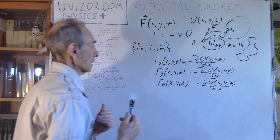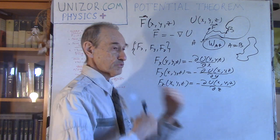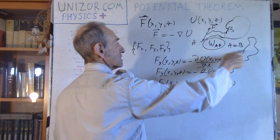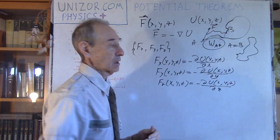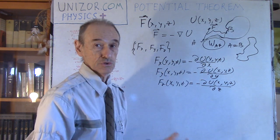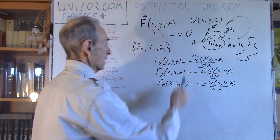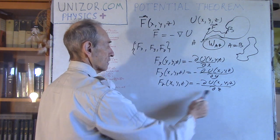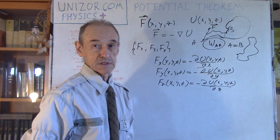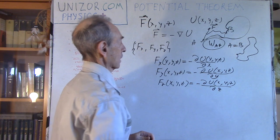Today I'm going to prove the converse theorem: if the field has this property that work is path-independent, then there exists a scalar potential function U connected to the field intensity force through those partial derivative equations.